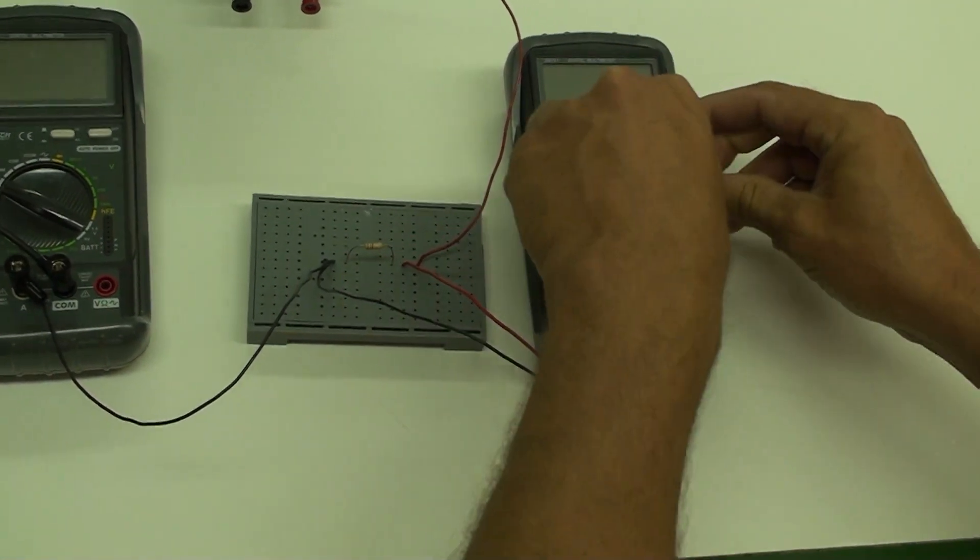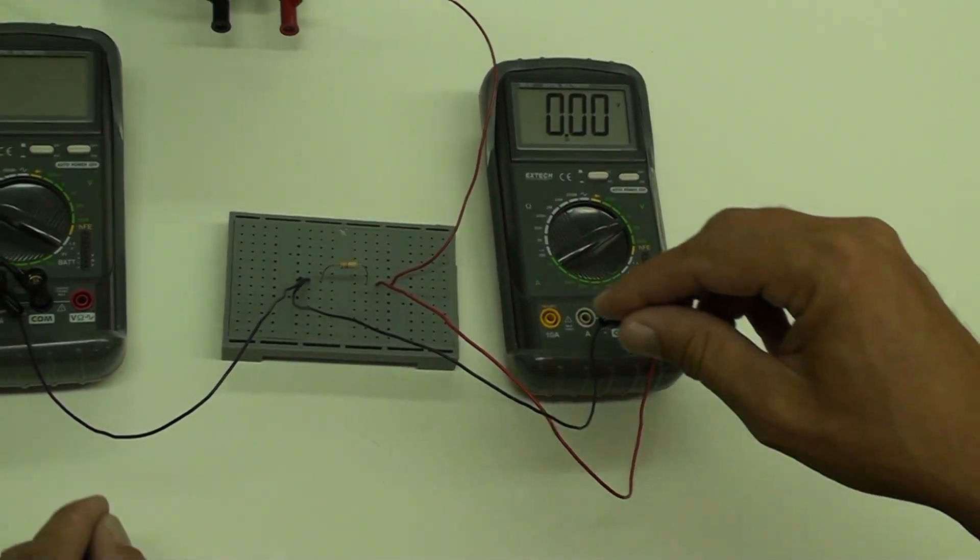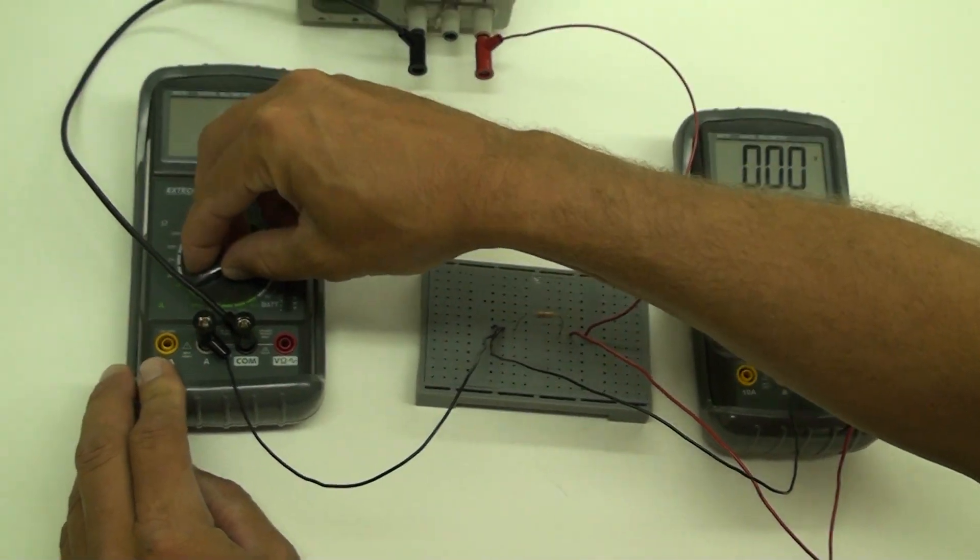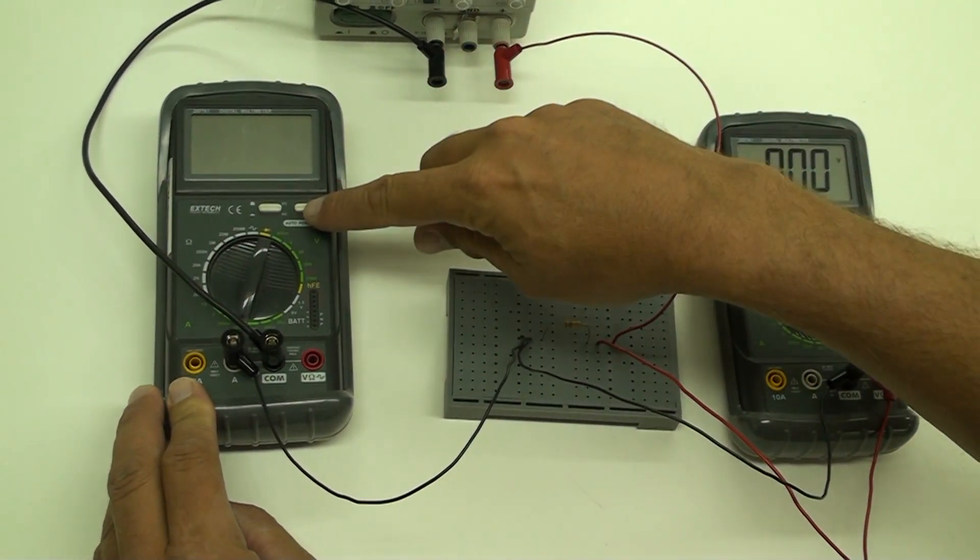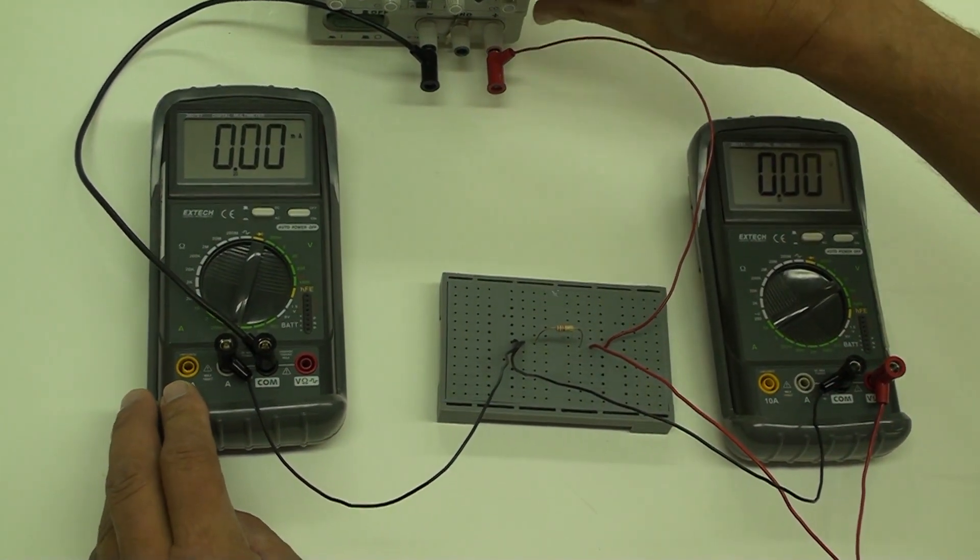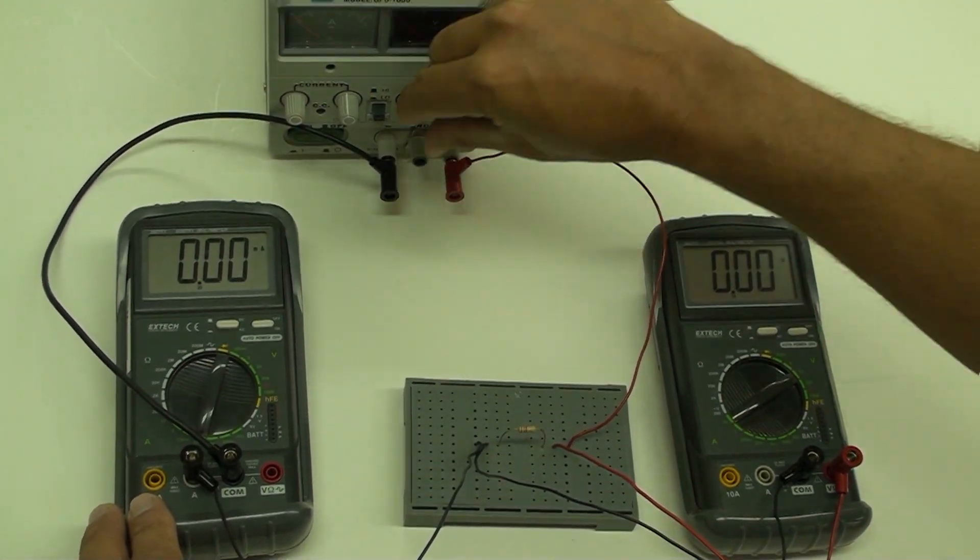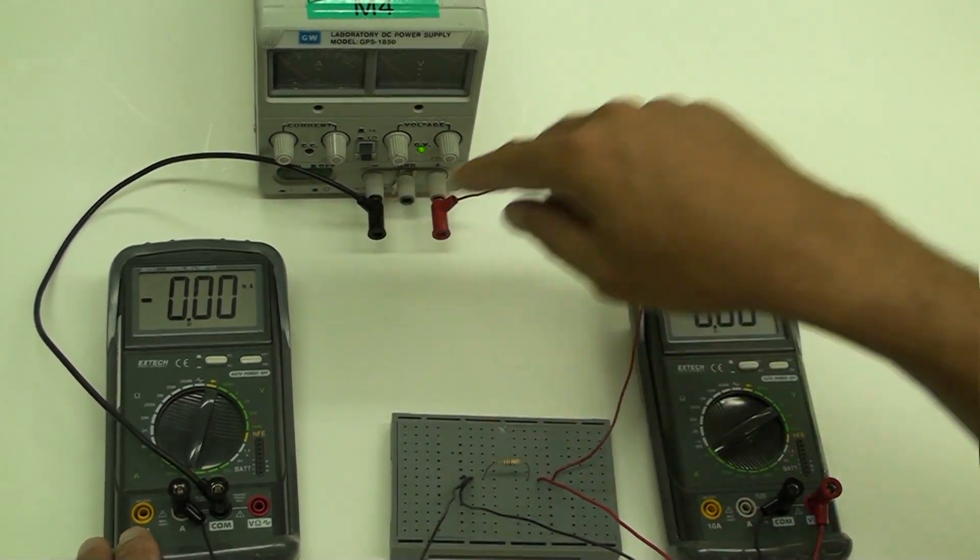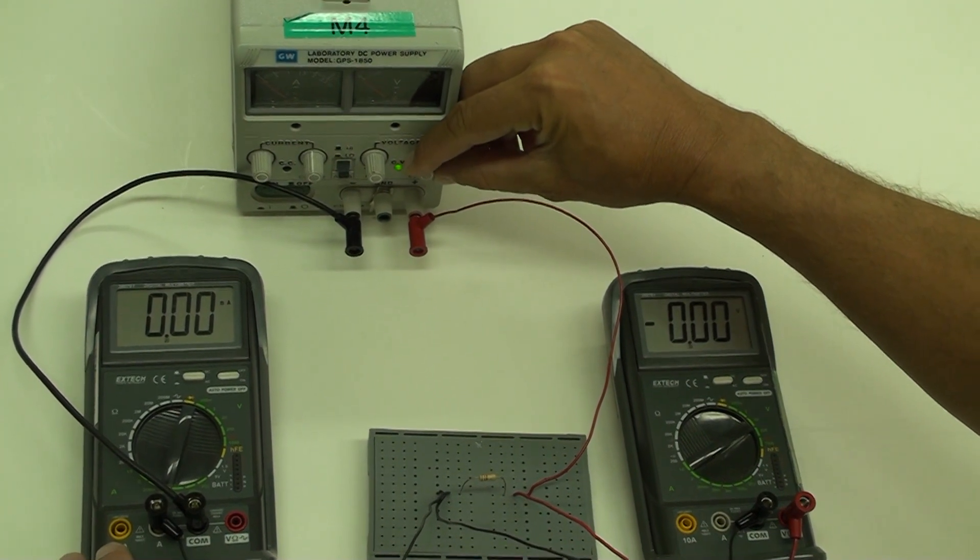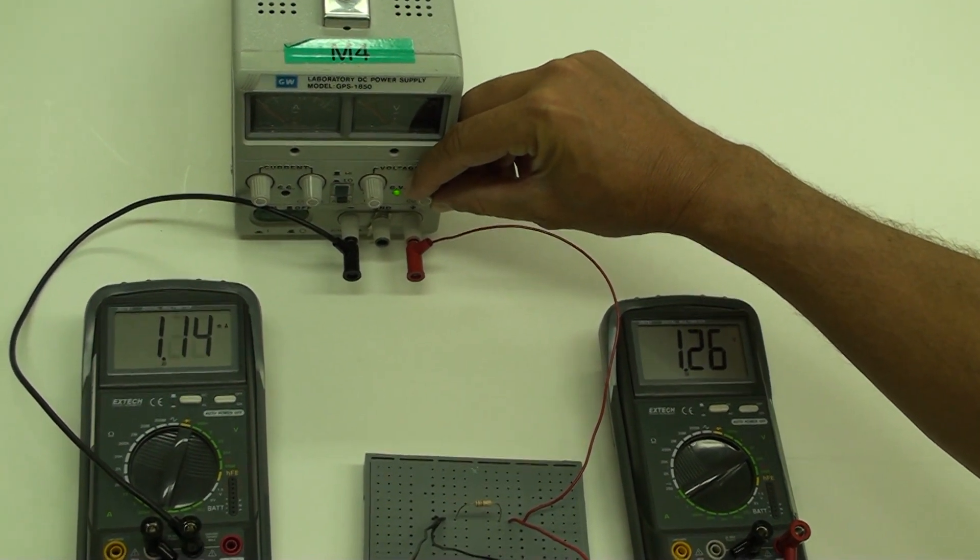Turn the dial on the voltmeter to the 20 volt maximum range at about 2 o'clock. Turn the dial on the ammeter to the 20 milliamp range at about 7 o'clock. Switch these meters on. Turn the two voltage knobs of the voltage source to zero and then turn on the power supply.